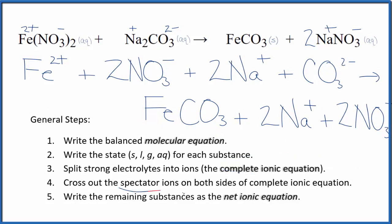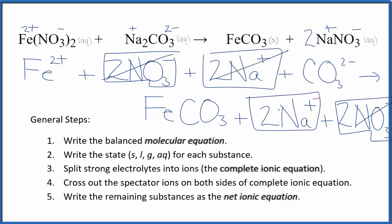Now we can cross out those spectator ions. They're on both sides of the complete ionic equation. So I see in the reactants here, 2 nitrates. Also in the products. So those are spectator ions. We can cross those out. 2 sodium ions in the products. 2 sodium ions. Cross them out.